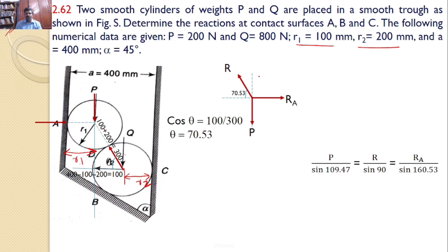Let us use the sine rule, because there are only three forces. All three forces act at a particular point and all three forces are divergent. So, you can find that P divided by angle between these two is equal to 180 minus 70.53, which gives the value of 109.47. So, it is P by sine 109.47 is equal to R divided by angle between these two is sine 90, and RA divided by angle between these two is 90 plus 70.53, which gives the value of 160.53.